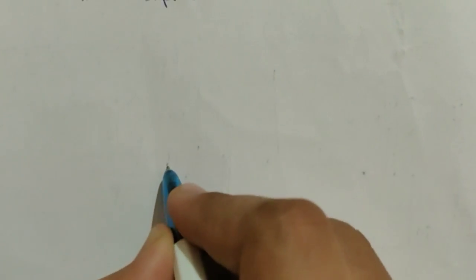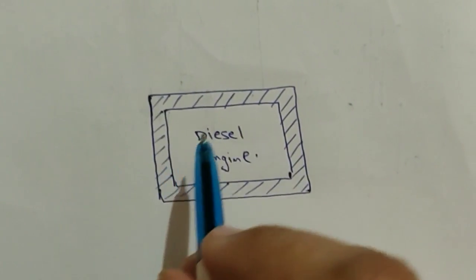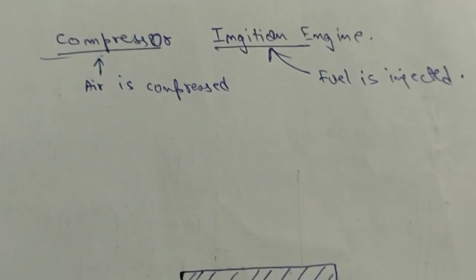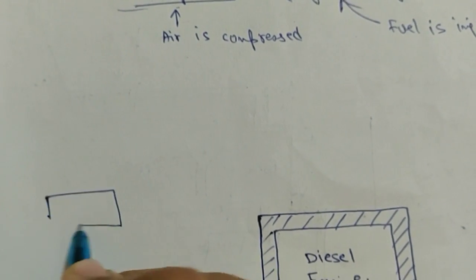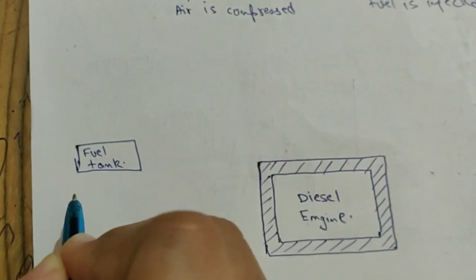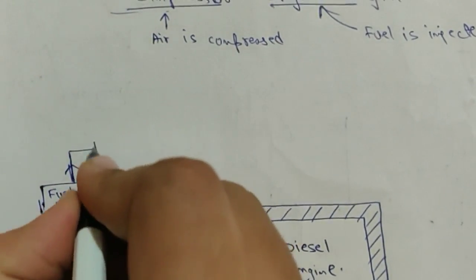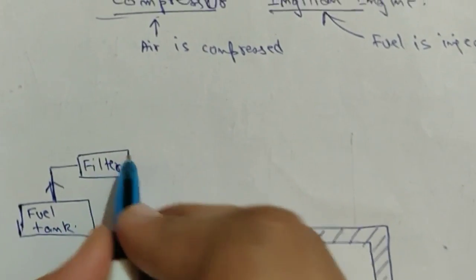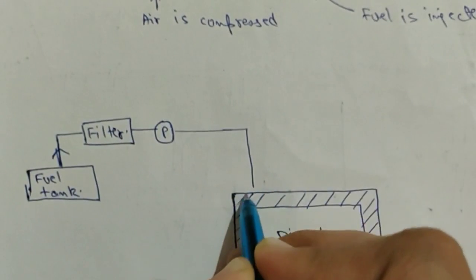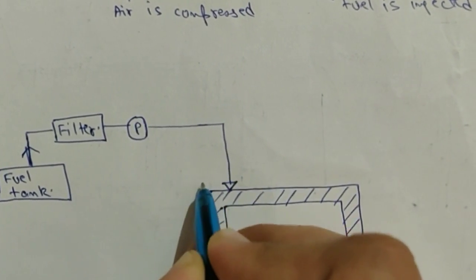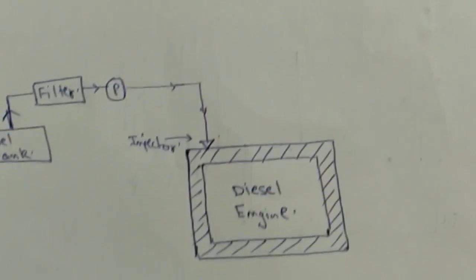So this is my diesel engine. The air is compressed and the fuel is injected. This is my fuel tank — the fuel in this pipeline is first filtered, then pumped, and then injected into the diesel engine via an injector.